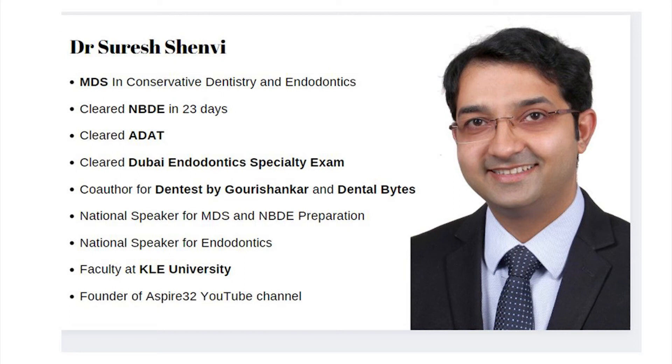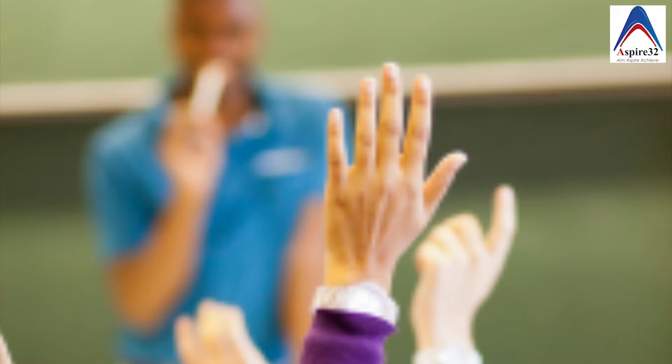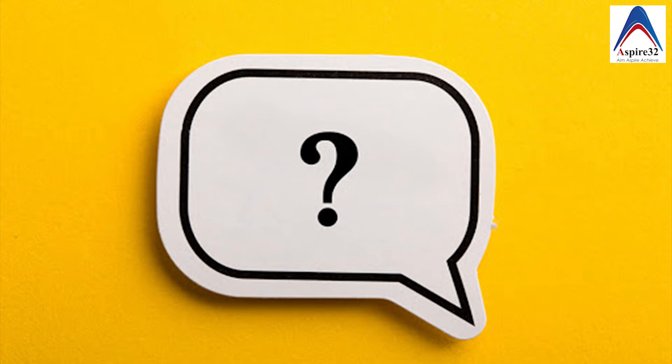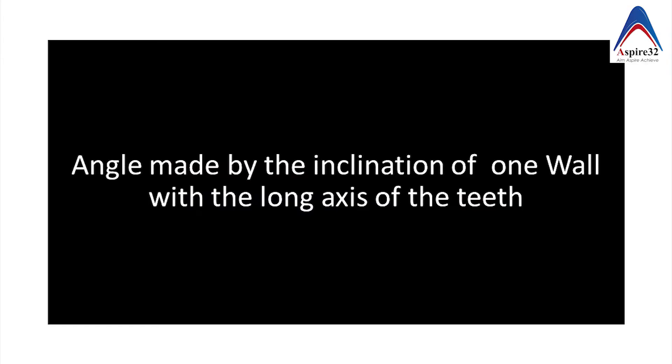Hello my dear friends, welcome back to the channel. This is your friend Dr. Suresh Shenvi. Recently one of my viewers asked me about angle of convergence and I am discussing the same in this video. As you all know, in indirect restorations it is important that we have to have a taper, and taper is basically the angle made by the inclination of one wall with the long axis of the tooth.